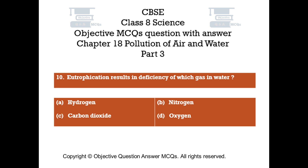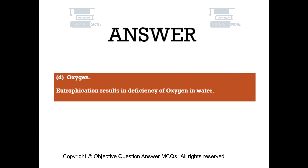Question number 10: Eutrophication results in deficiency of which gas in water? Option A: hydrogen, Option B: nitrogen, Option C: carbon dioxide, Option D: oxygen. The right answer is Option D: oxygen. Eutrophication results in deficiency of oxygen in water.